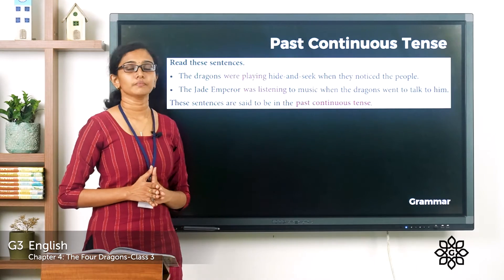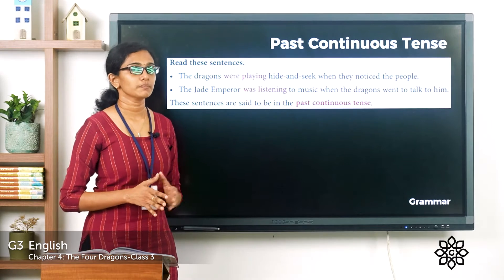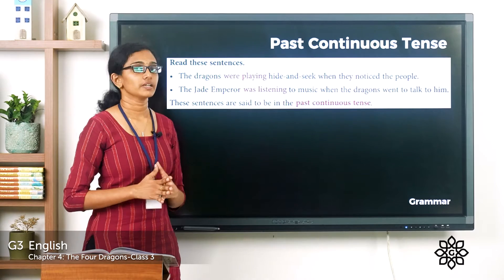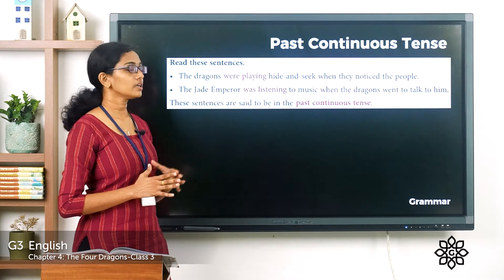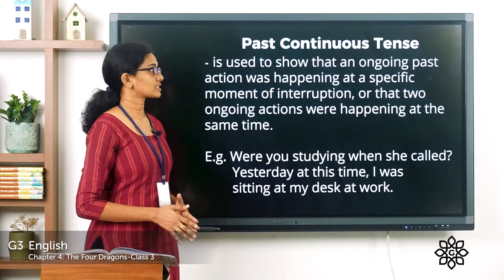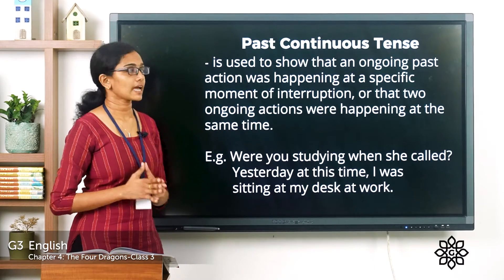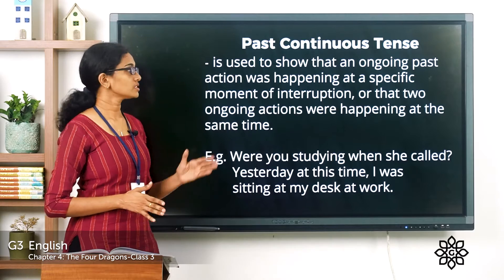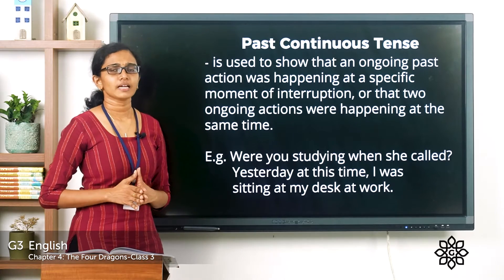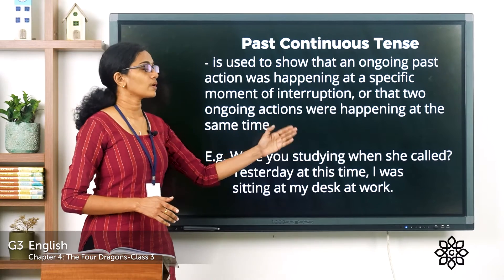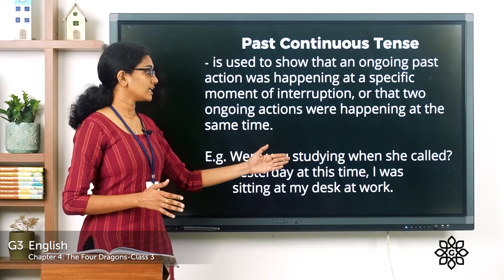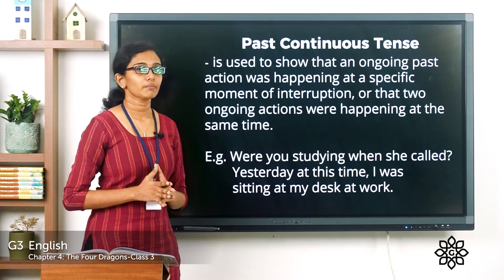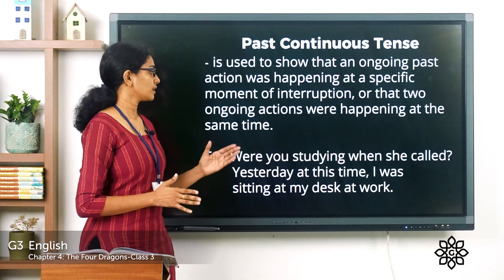The dragons were playing when they were interrupted by seeing the people - the moment they noticed the people, their play got interrupted. The Emperor was listening to the music of the fairies and when they went there, he was interrupted. The past continuous tense is used to show an ongoing past action happening at a specific moment of interruption, or that two ongoing actions were happening at the same time. For example: 'Were you studying when she called?' - an ongoing past action interrupted by the calling.